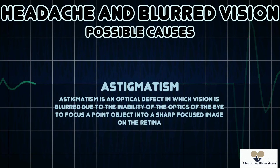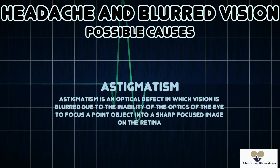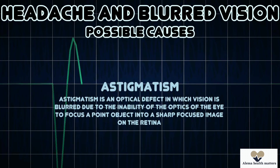Astigmatism can also cause a headache or blurred vision. It is an optical defect in which vision is blurred due to the inability of the eye to focus a point object into a sharp focused image on the retina.